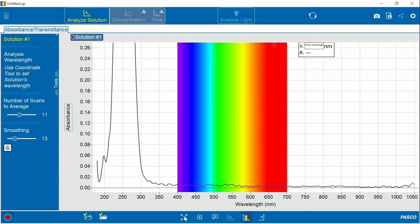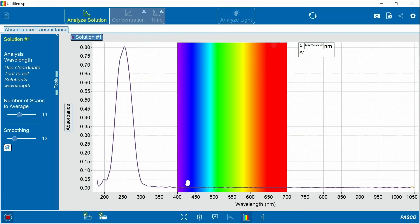I'm going to scale the data. And you'll notice that this solution does not absorb light in the visible region, but it does in the UV region. Now I can use the coordinate tool to identify the peak absorbance.